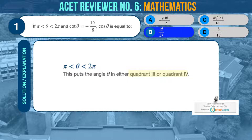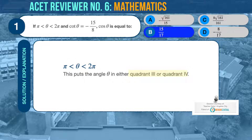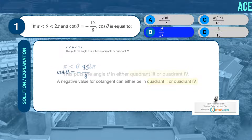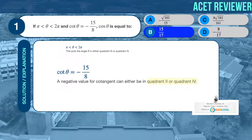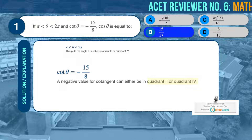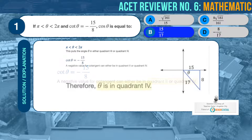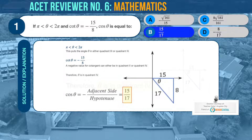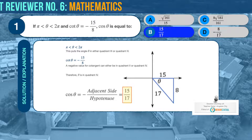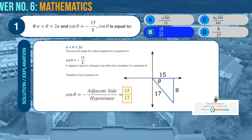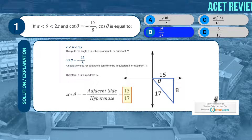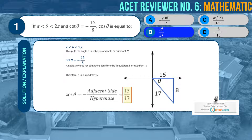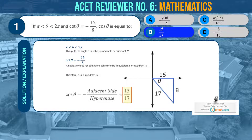The correct answer is B. Since theta is greater than pi but is less than 2 pi, we can deduce that angle theta is located either in the third or fourth quadrant. And since cotangent theta is equal to a negative value, we can deduce that angle theta is located either in the second or fourth quadrant. Therefore, angle theta is in the fourth quadrant. We can then draw the triangle theta as shown. From the resulting triangle, and since theta is in the fourth quadrant, cosine theta should be equal to the negative of the length of the adjacent side over the length of the hypotenuse. The negative value of the hypotenuse cancels out the initial negative value of cosine theta. Therefore, the correct answer is 15 over 17.